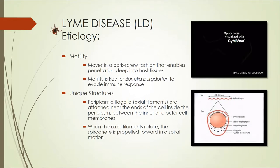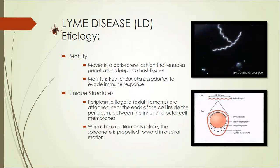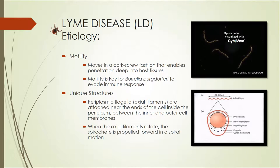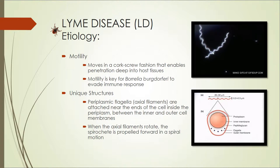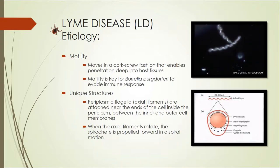The Borrelia burgdorferi spirochete moves in a corkscrew fashion, which enables it to penetrate into host tissue like a screw. This motility is key for the bacterium to evade the body's immune response. Periplasmic flagella, or axial filaments, are attached inside the periplasm near the ends of the cell between the inner and outer cell membranes, as shown at the bottom right. When the filaments rotate, the spirochete is propelled forward in a spiral motion, as pictured at the top right.